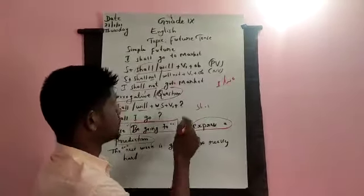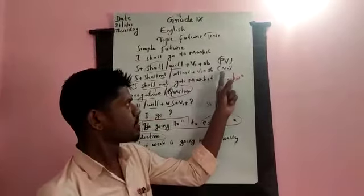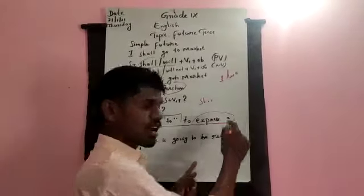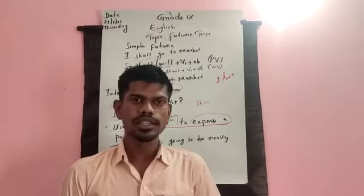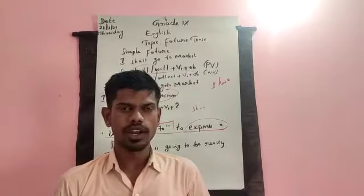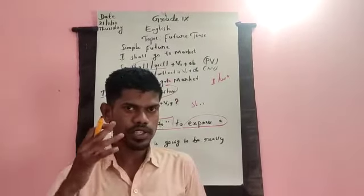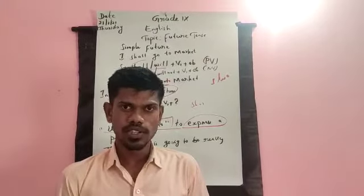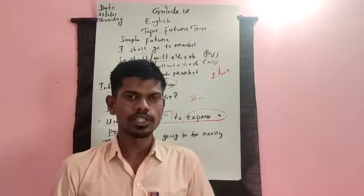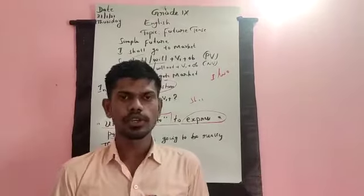Let us sum up simple future. Keep in mind: what is the structure for positive, what is the structure for negative, how to make interrogative, and where we use 'be going to.' Shall and will — nowadays we use shall only for the first person, singular or plural: 'I shall,' 'we shall.' If you have any doubts, just ask me and I am ready to clarify. Now start writing a few examples for simple future. Thank you all. Have a good day.